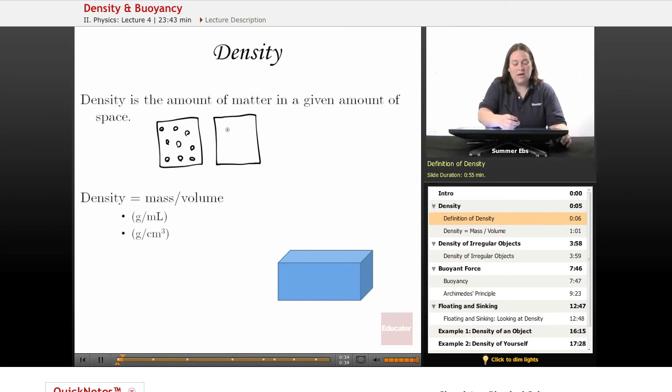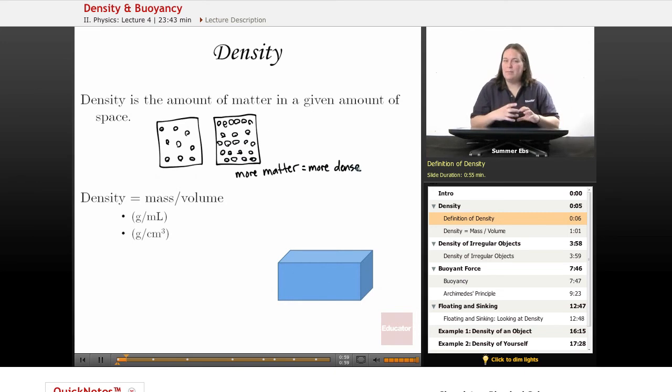On one side we have nine particles, and on the other side they're packed together better, so we have well more than nine particles. What that means is there's more matter on the right and less matter on the left. More matter means it's more dense because it has more matter in that same amount of space.